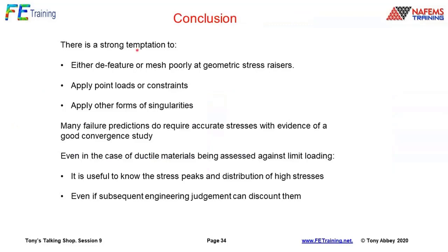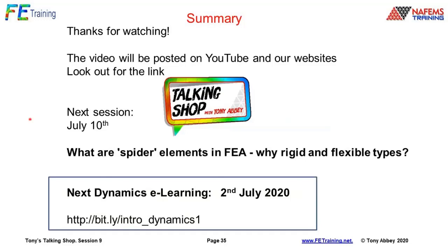In conclusion, there's a very strong temptation to de-feature or mesh poorly at geometric stress raisers, apply point loads or constraints, and include other forms of singularities. Many failure predictions want accurate stresses without evidence of good convergence, so putting a singularity in is a bad idea. Instead we want a stress concentration that is shown to be converging. Even for ductile materials assessed against limit loads, it's useful to know the stress peaks and distributions — even if we discount them later, at least know what's being given.